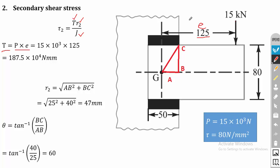In some problems, the distance from the load to the plate endpoint is given, not the eccentricity. If the eccentricity is not directly given, you have to calculate the center of gravity from the weld geometry and then add that distance to find the torque. But here the distance between the center of gravity and the load acting point is directly given as 125 mm, so you can directly use it. Whenever you see a problem on in-plane eccentricity, first check whether the eccentricity is directly given or not.